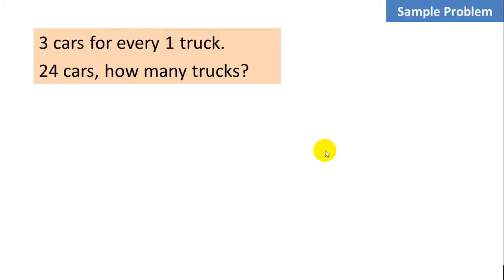Let's look at a sample problem. We're given that there are three cars for every one truck. There are 24 cars. How many trucks are there? So let's set up the ratio that we're given as 3 to 1, where 3 represents cars and 1 trucks. That equals a similar ratio, 24 cars. Because 3 is cars and we put it on top, we're going to put 24 on top to indicate cars. And we have an unknown number of trucks. So in this case, we simply cross-multiply and divide.